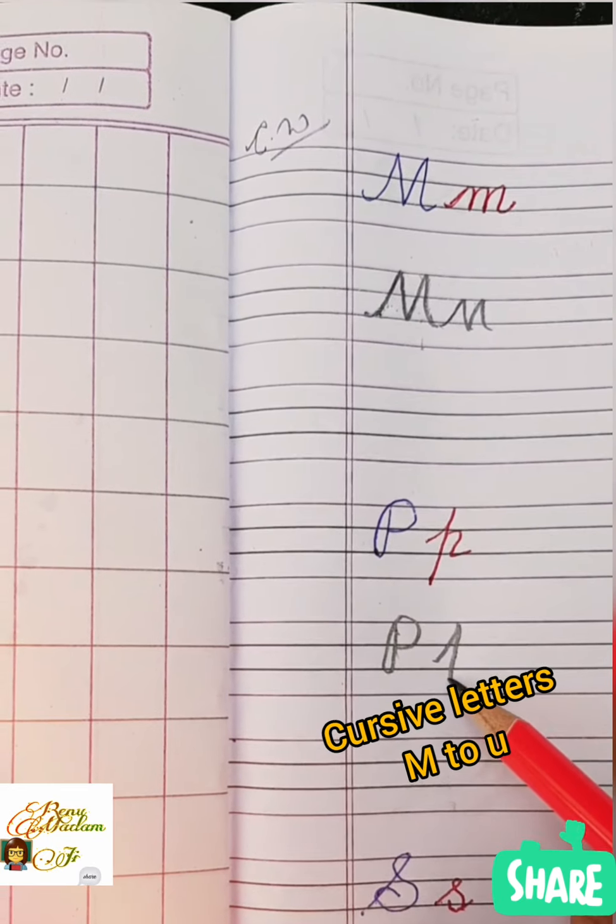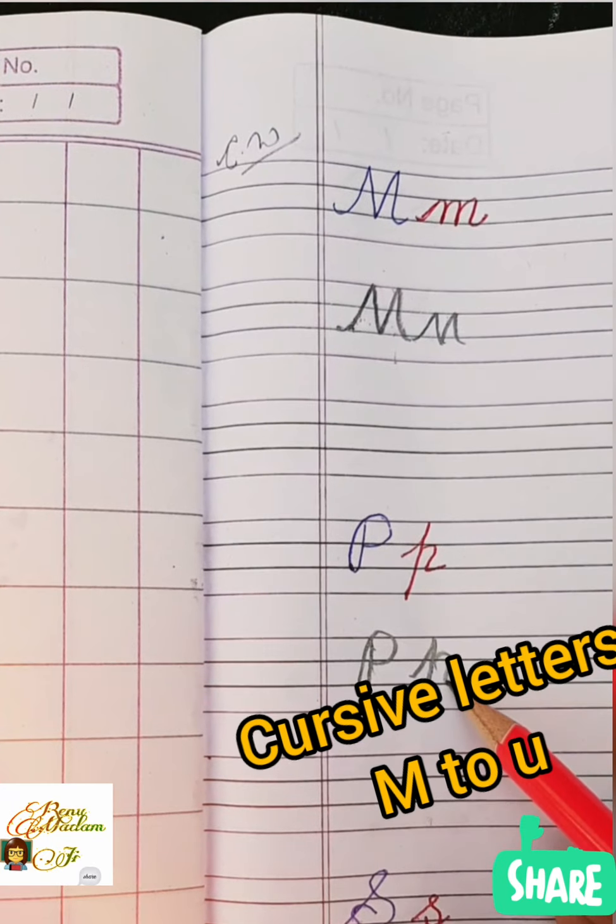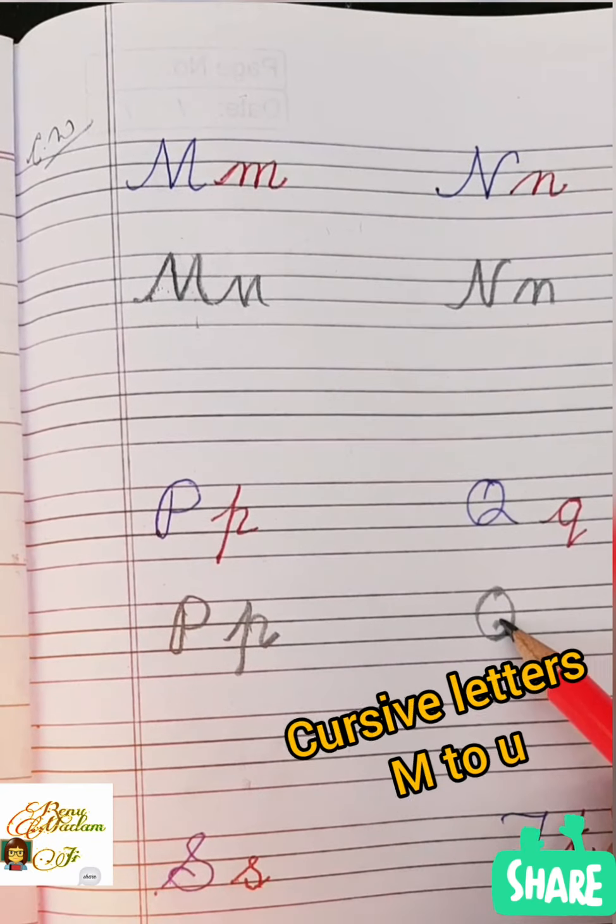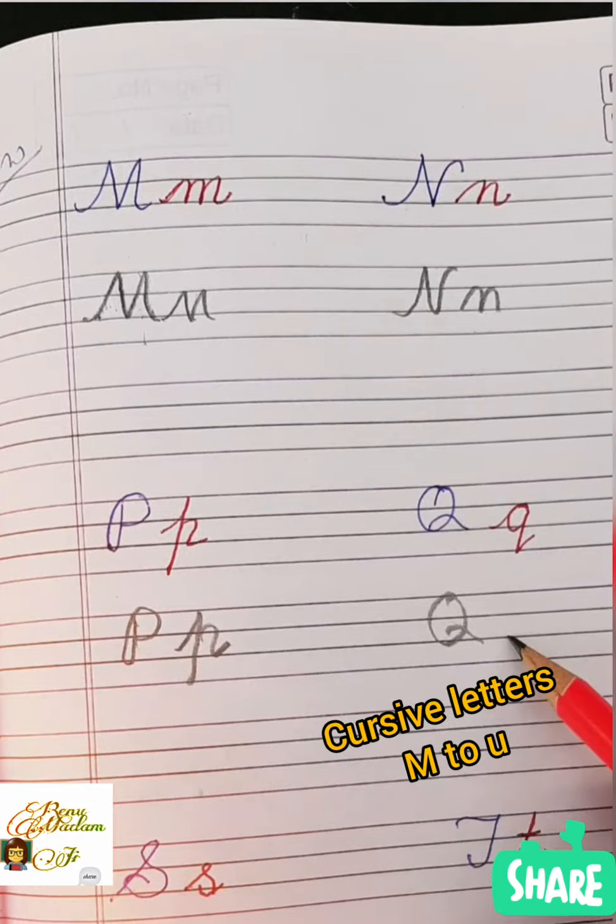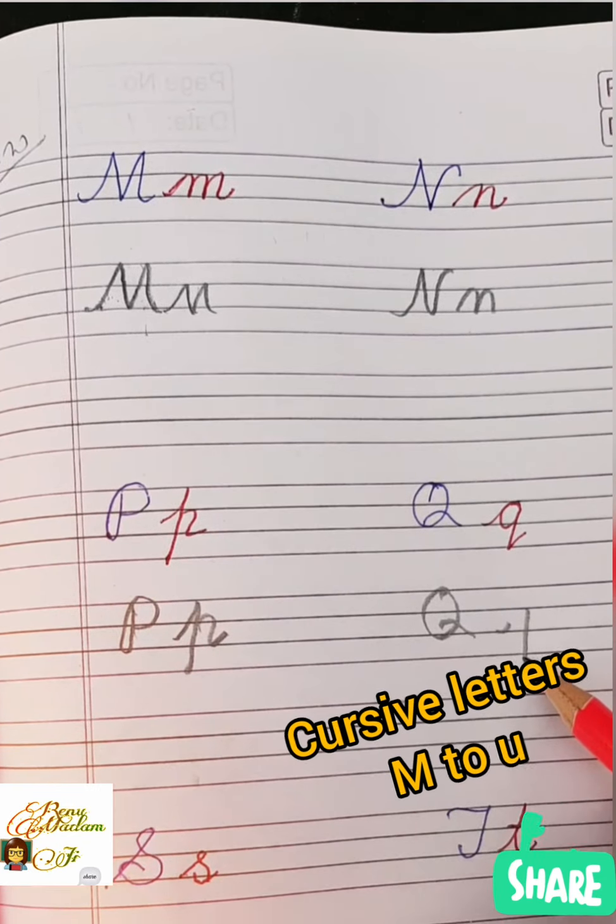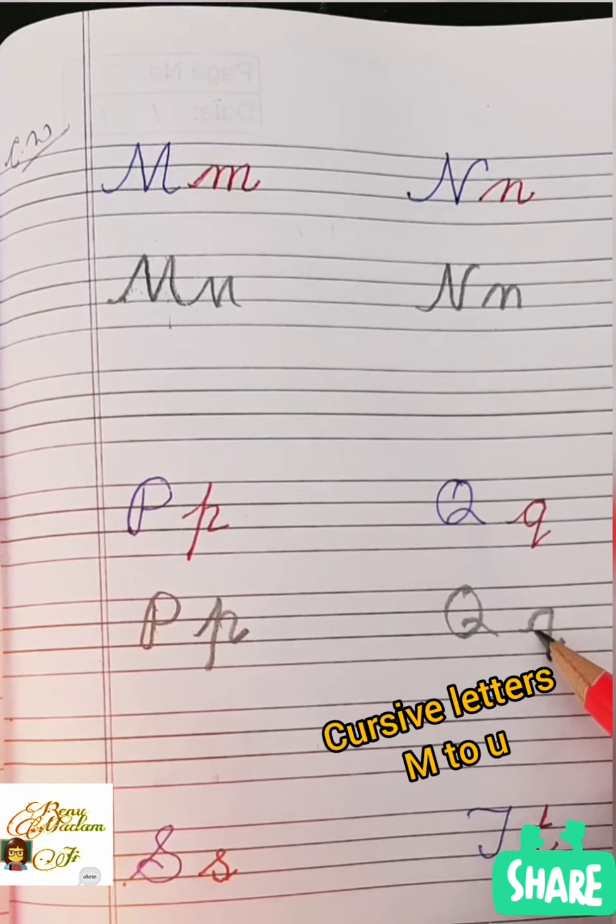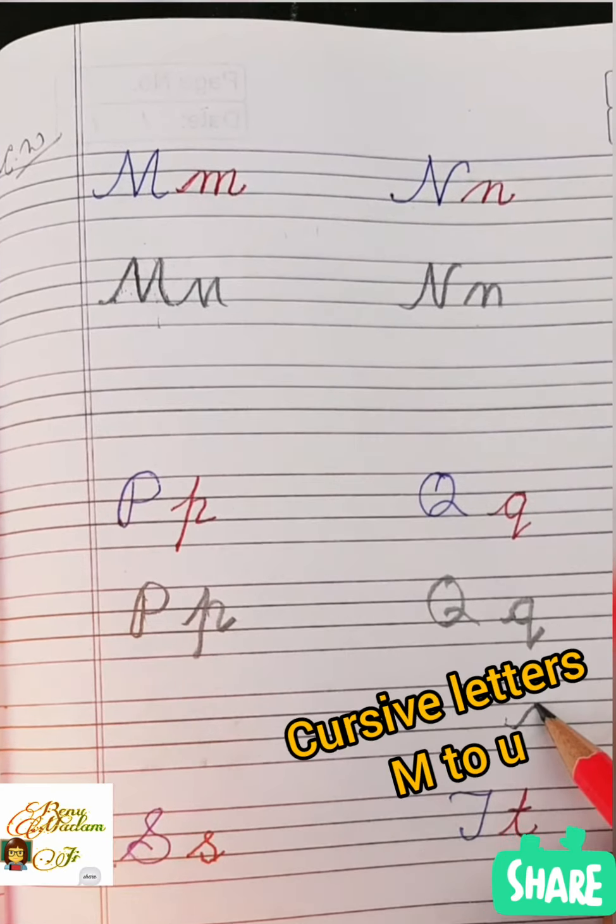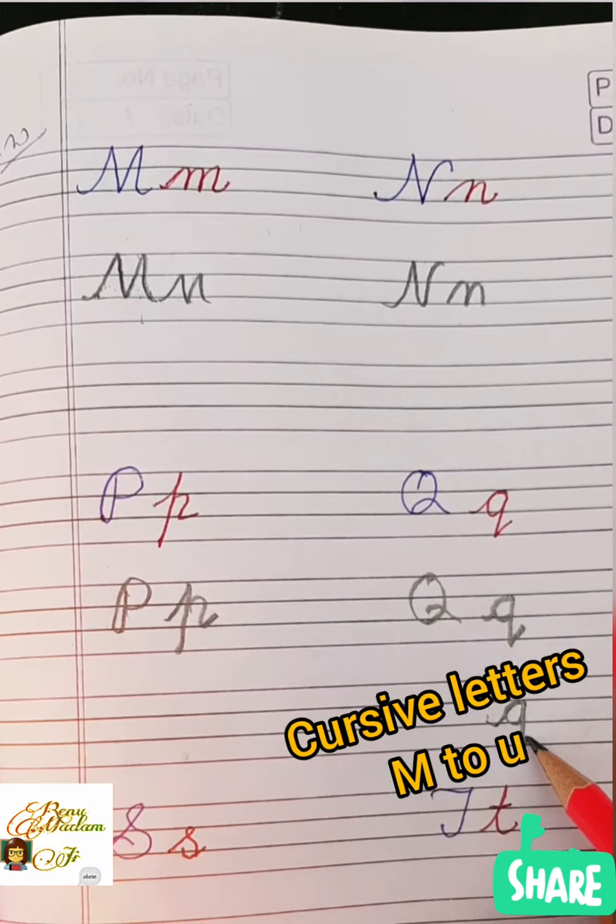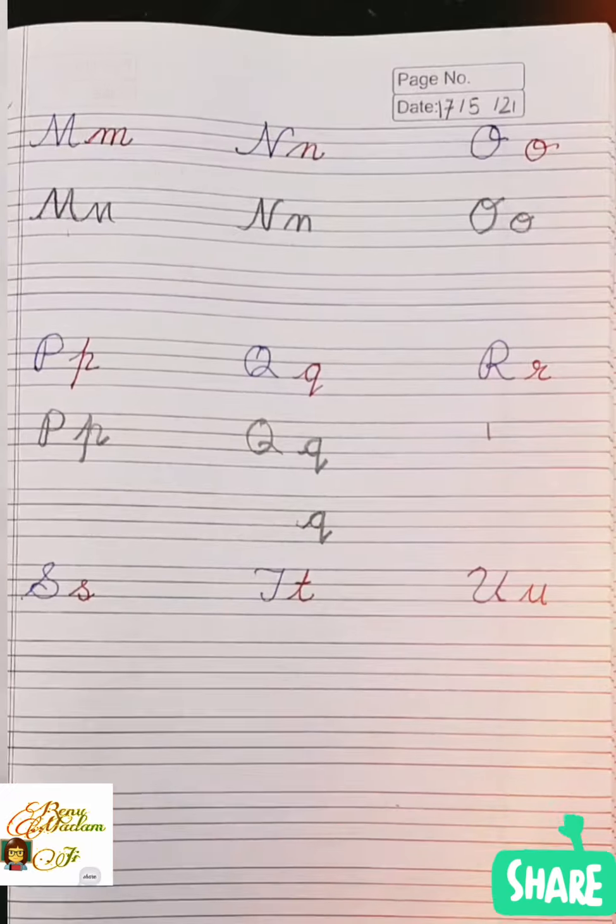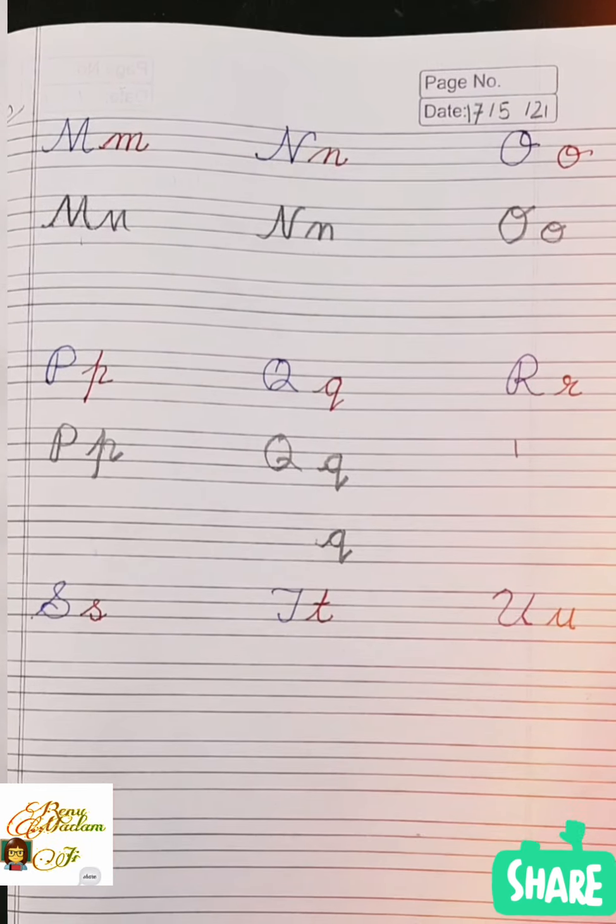And write O like a circle, then one loop. Okay, you can draw this type: standing line, one half circle. And this is one more method: draw a C, then standing and one slanting, small slanting. This is our Q.